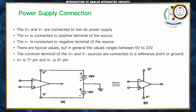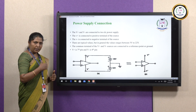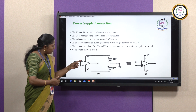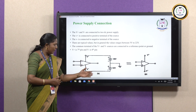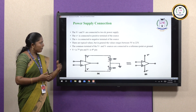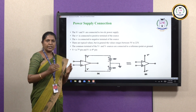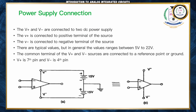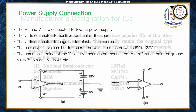Regarding power supply, the op-amp has two inputs: minus (inverting) and plus (non-inverting). It needs to be given +Vcc and -Vcc. The range of power supply varies between 5 volts to 22 volts. Generally, we use 15 volts, so +15V will be given to the seventh pin and -15V should be given to the fourth pin.